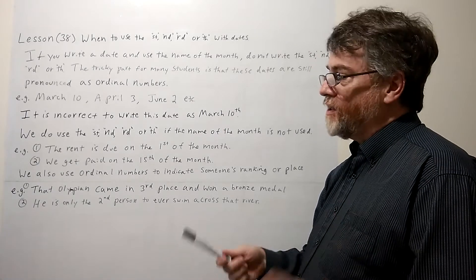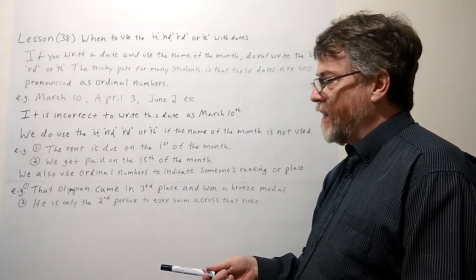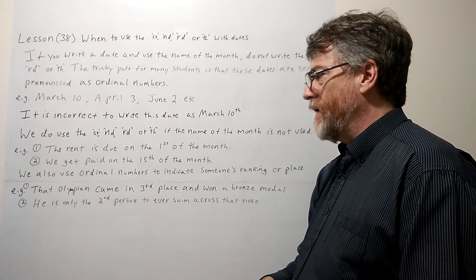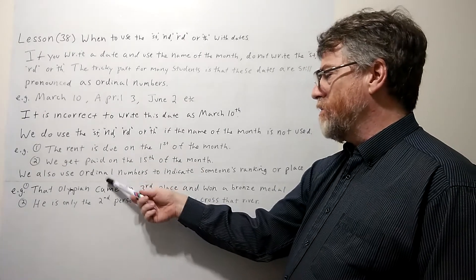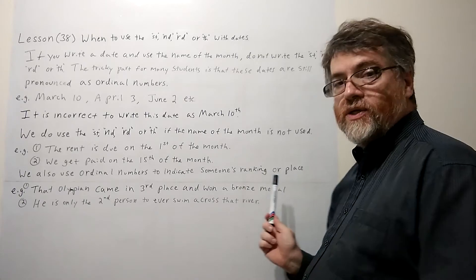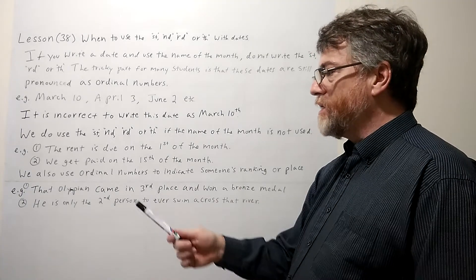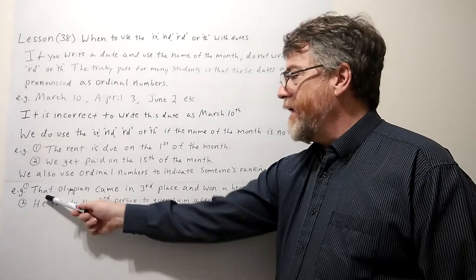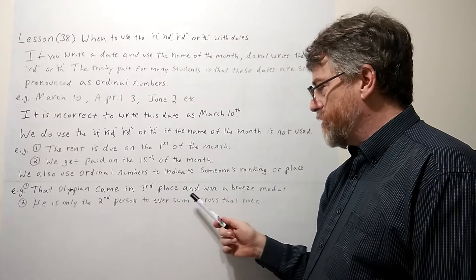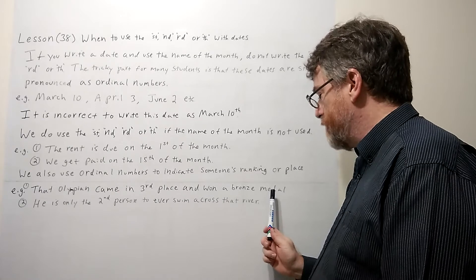And just so you know how we might use some other ordinal numbers with ST, ND, RD. We also use ordinal numbers to indicate someone's ranking or place. All right, let's look at the first example.